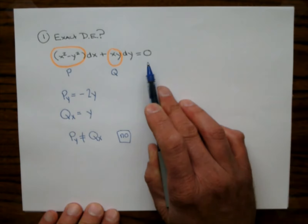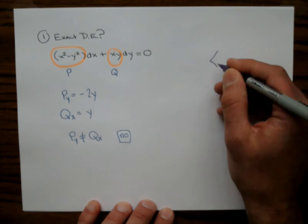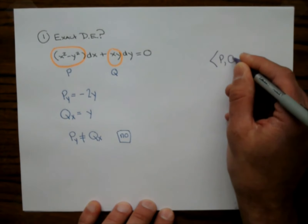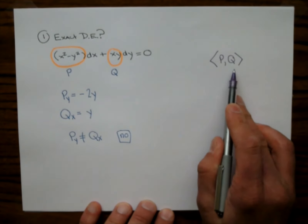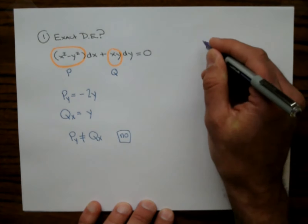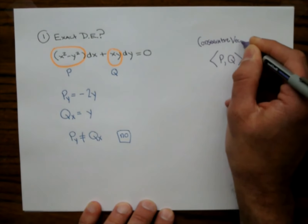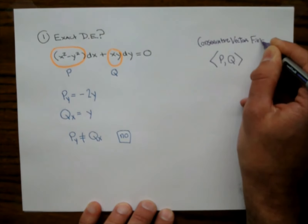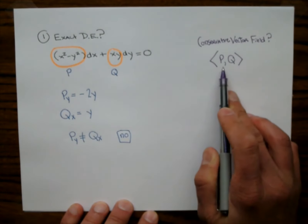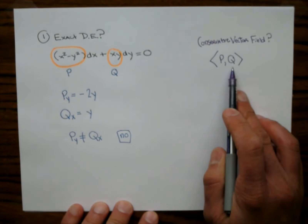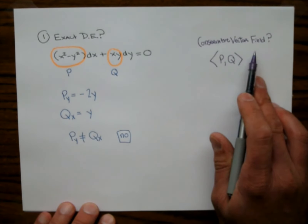For those who have had Calculus 3, you had vector fields P, Q in R2 and you were asked to check if the vector field was a conservative vector field. This is pretty much the same question. If you haven't seen vector fields, forget about this. If it was a conservative vector field, it could be generated by something called a potential function.